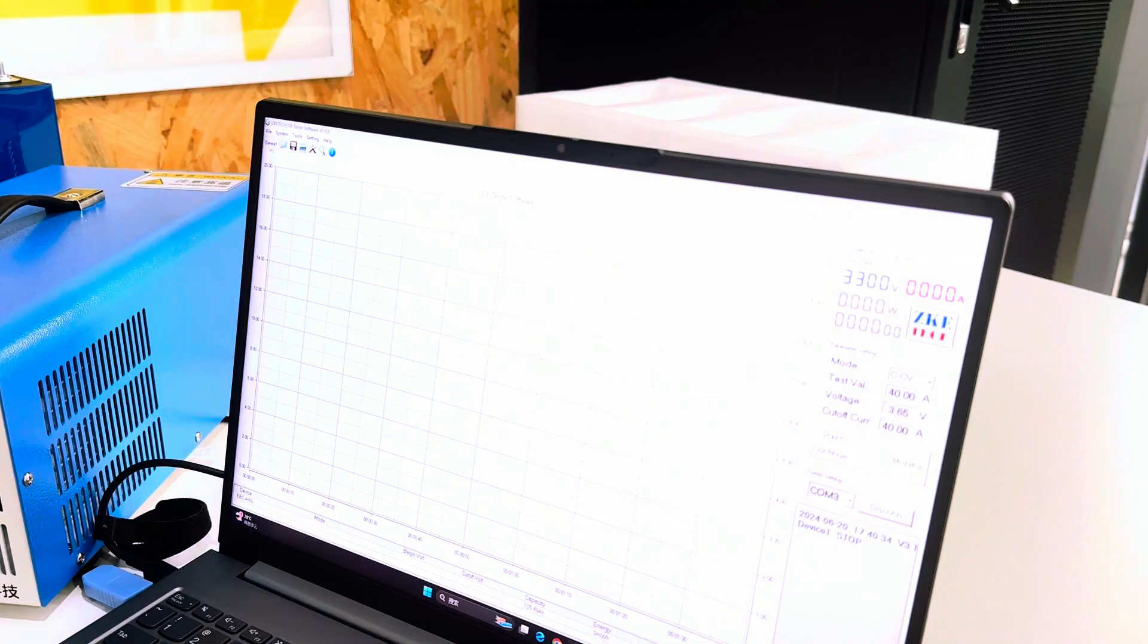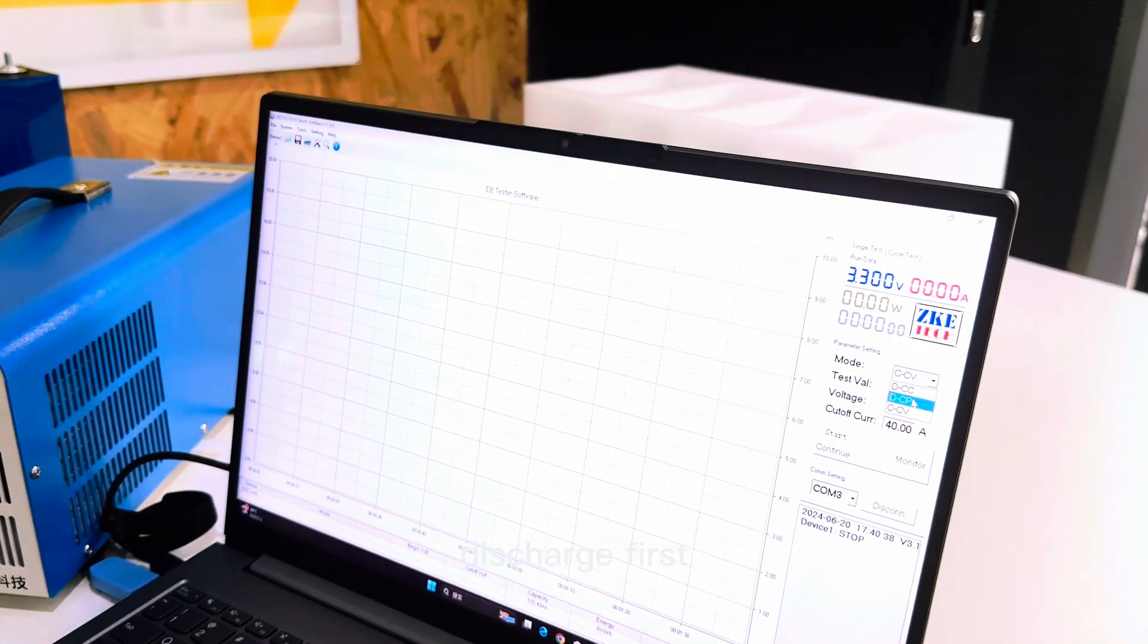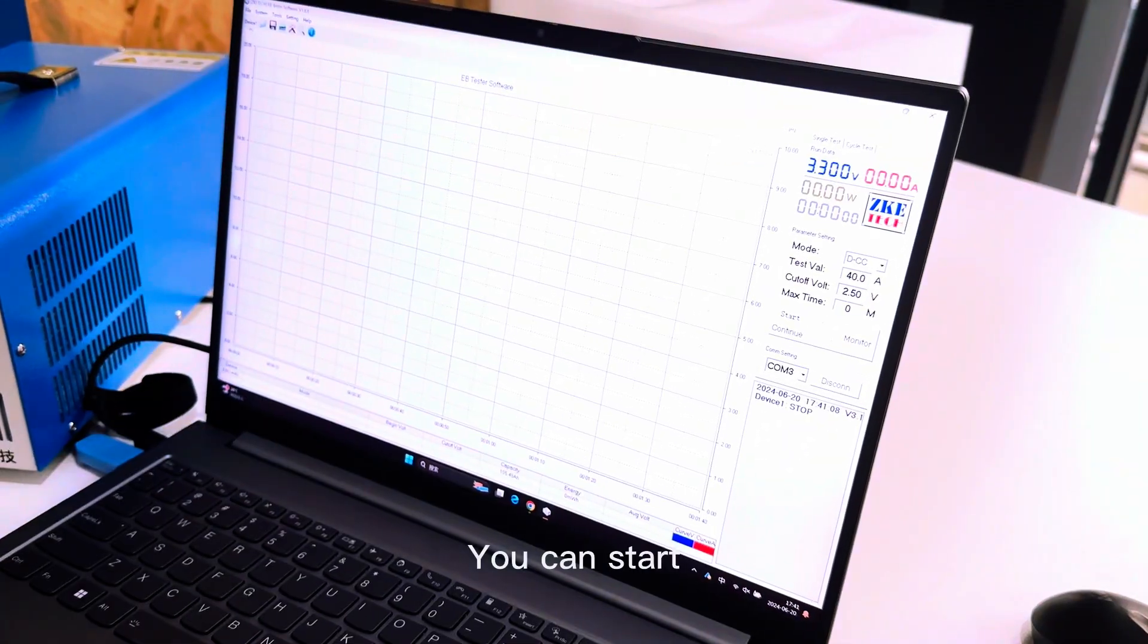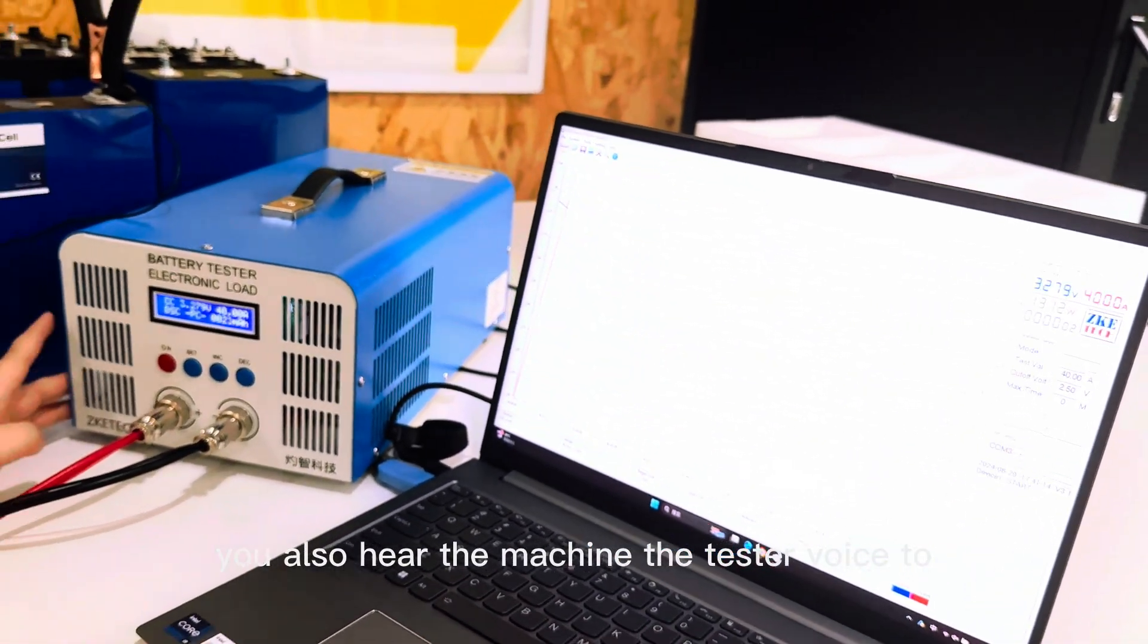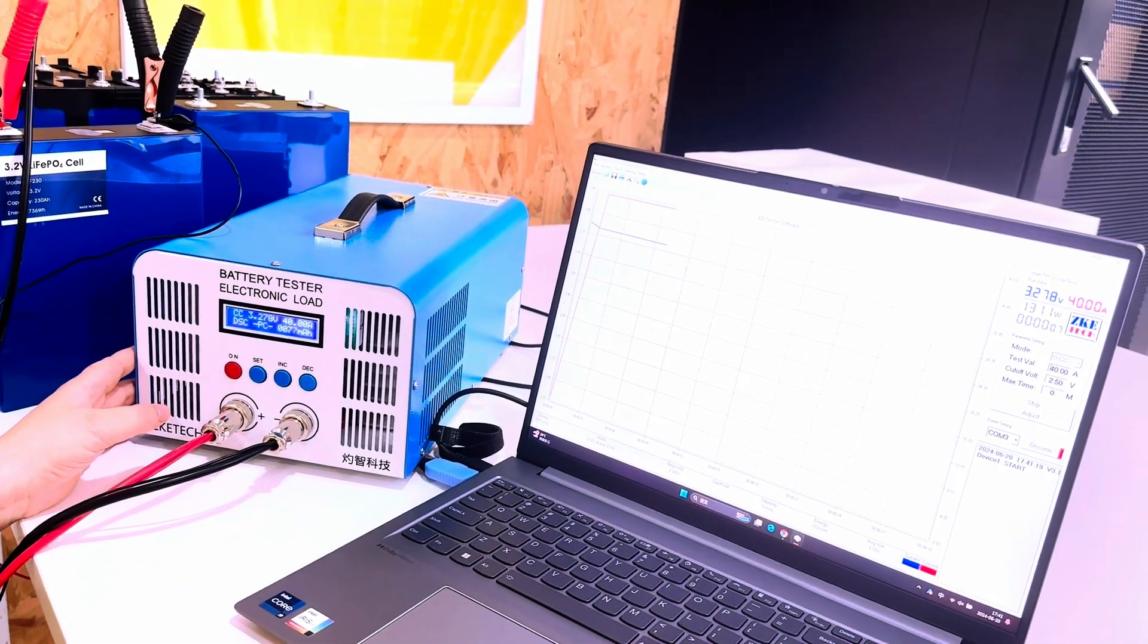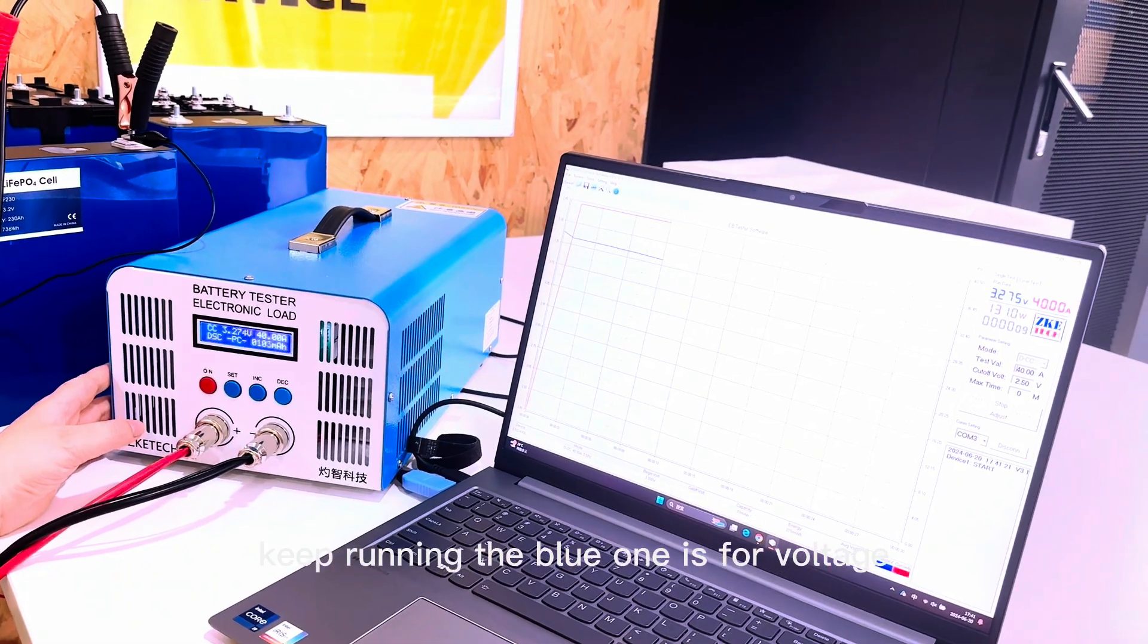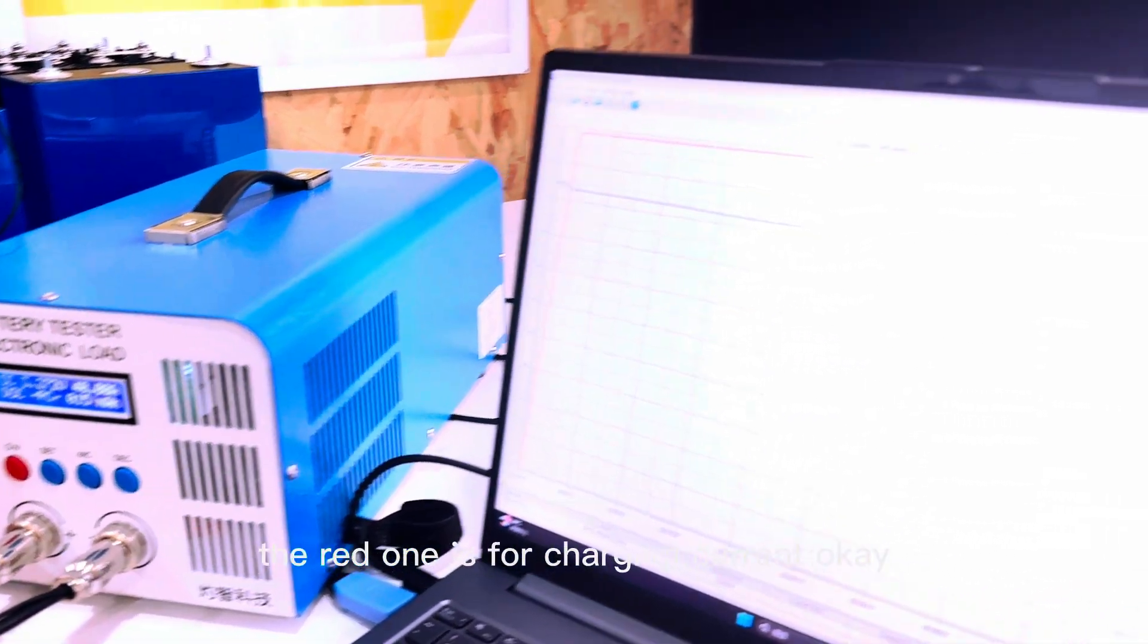And then we just discharge first, and then you can start. You also will hear the machine, the tester voice when it turns on. And the curve keeps running. The blue one is for voltage, the red one is for charging current.